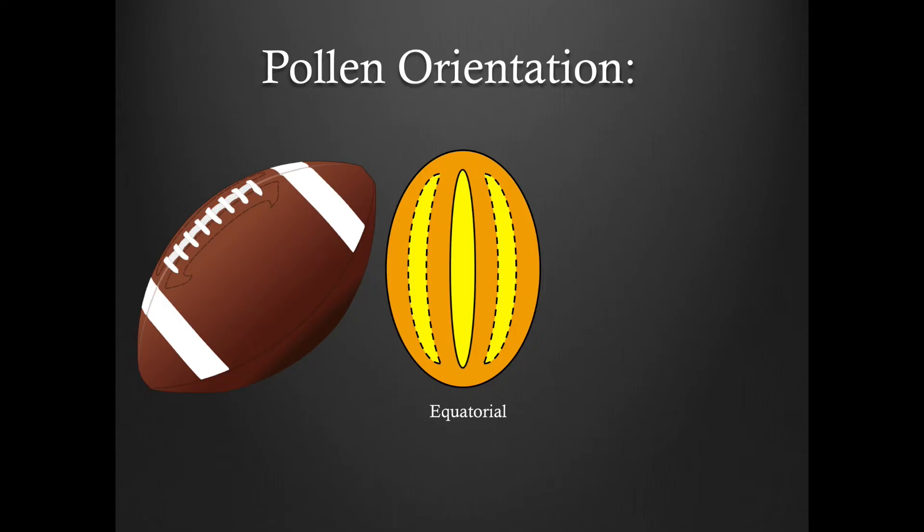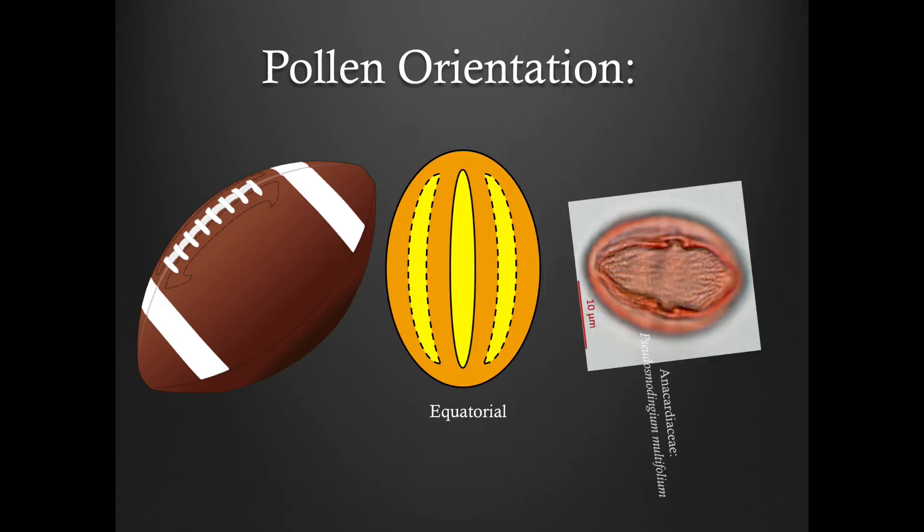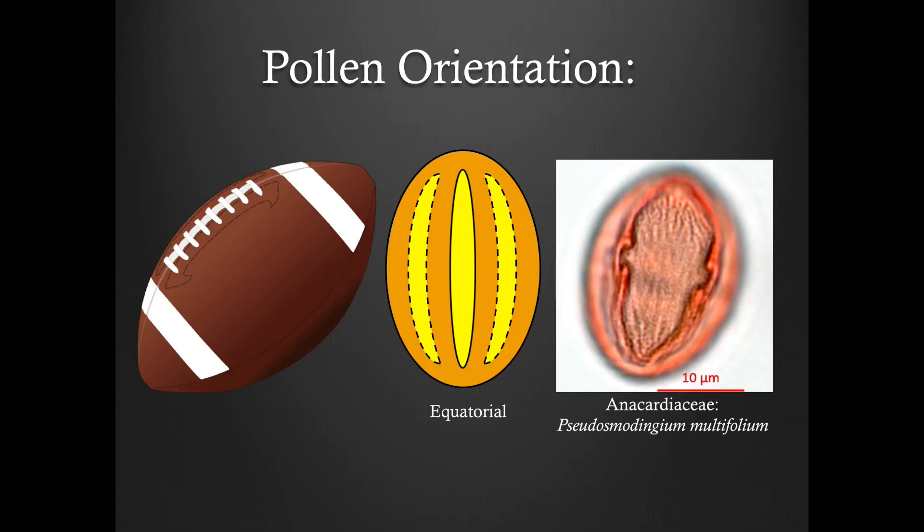In the center of the screen is a cartoon representation of an equatorial view. To the right is an anacardiaceae grain in its equatorial orientation.